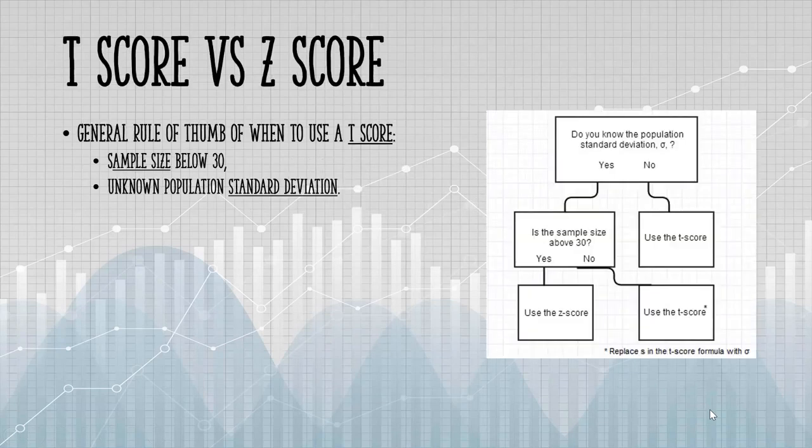T-scores and Z-scores are both used in hypothesis testing. However, the decision to use a T-score or a Z-score in your hypothesis testing causes a great deal of confusion. If you're taking a statistics class, you'll be using the Z-score a lot more than the T-score. But in real life, you'll be using the T-score more often.